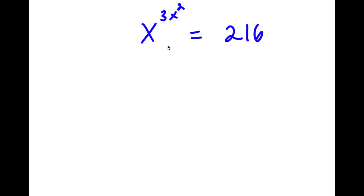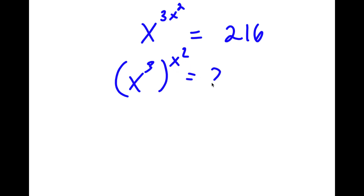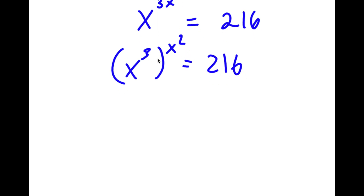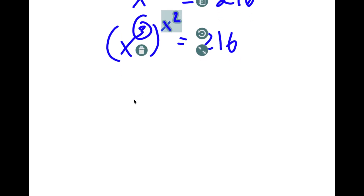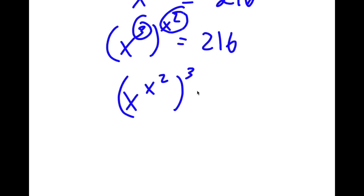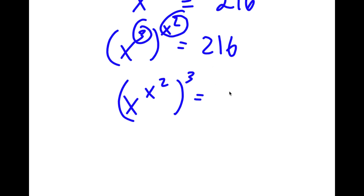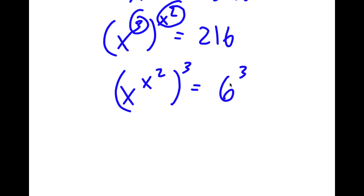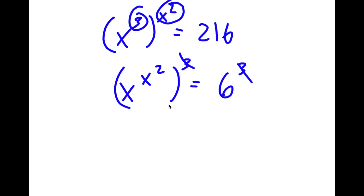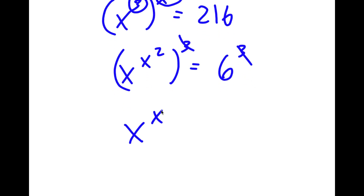So in this problem, I have x to the power of 3x squared is equal to 216. I'm going to first start by rewriting this as x to the power of 3 to the power of x squared is equal to 216. And now I'm going to switch the order of 3 and x squared. So this is the same thing as x to the power of x squared to the power of 3 is equal to 216, which I'm going to rewrite as 6 to the power of 3. Now these two 3s can simply cancel out, so now I have x to the power of x squared is equal to 6.